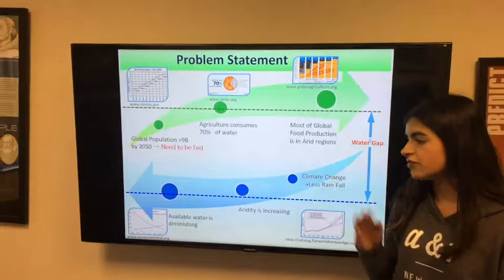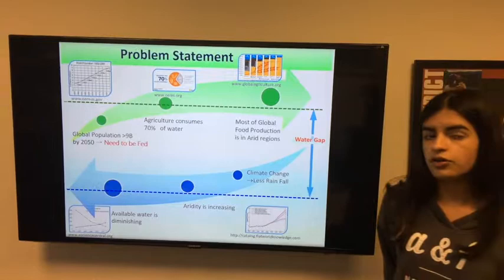Climate change causes less rainfall, aridity is increasing, and available water is diminishing, and these factors create a food crisis and a water gap.